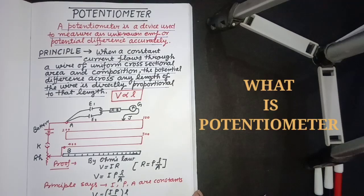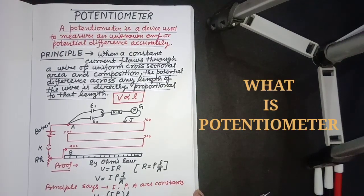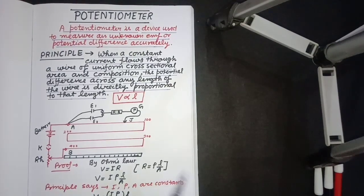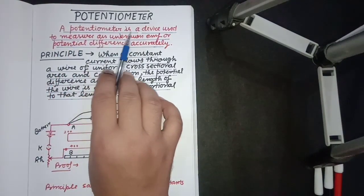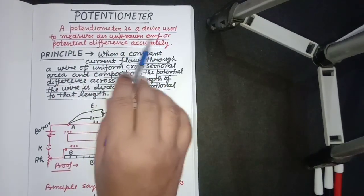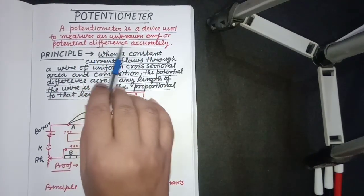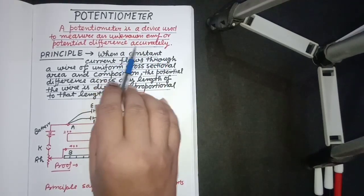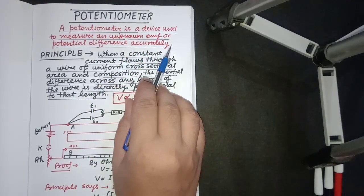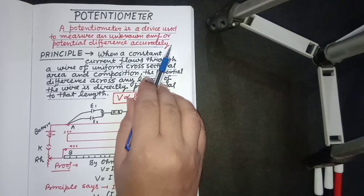have to understand what is the potentiometer. It is also an important topic for board examinations. So what is a potentiometer? A potentiometer is a device used to measure an unknown EMF or potential difference accurately. The apparatus is used for finding the EMF or potential